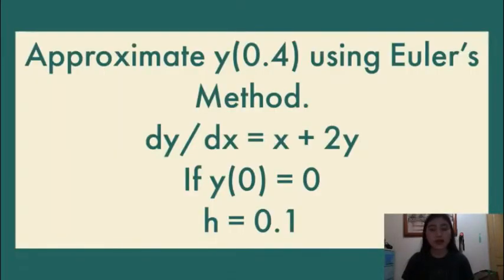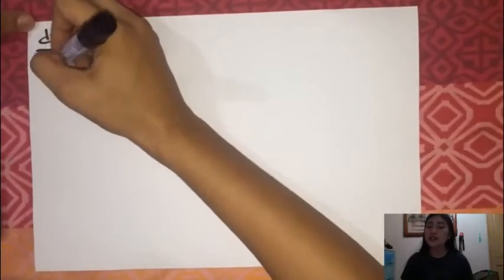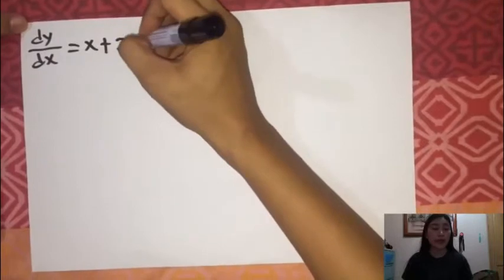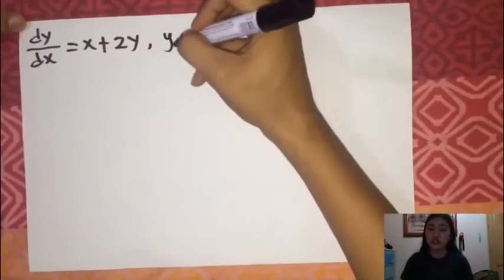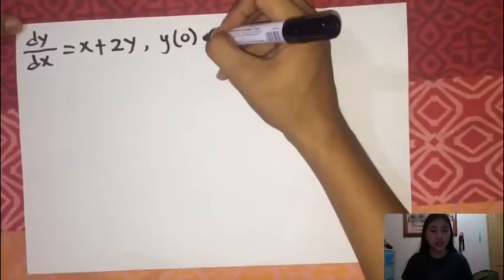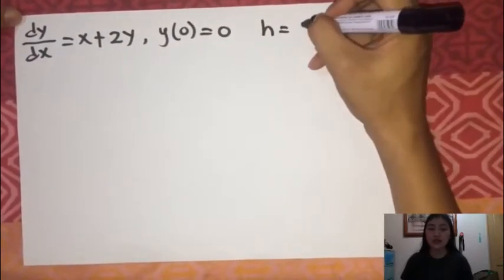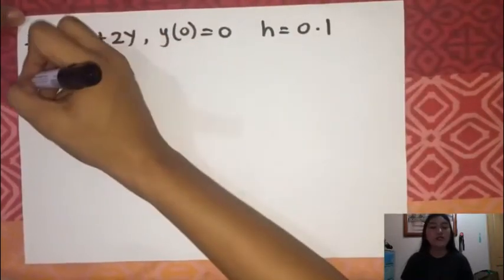Approximate the value y of 0.4 using Euler's method. Given the equation dy over dx equals x plus 2y, if the initial condition y of 0 equals 0, and the step size h equals 0.1.